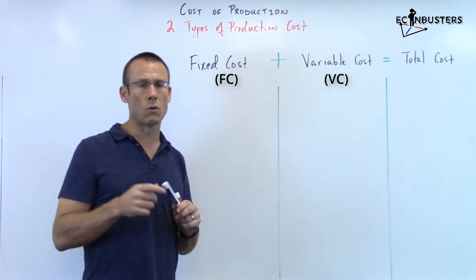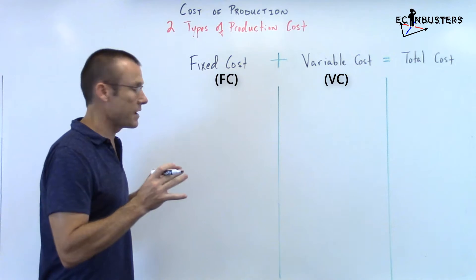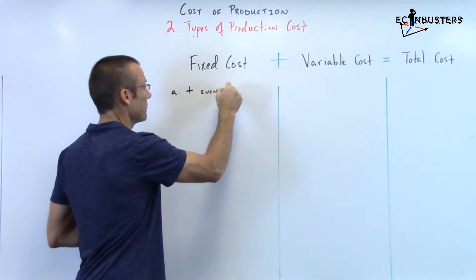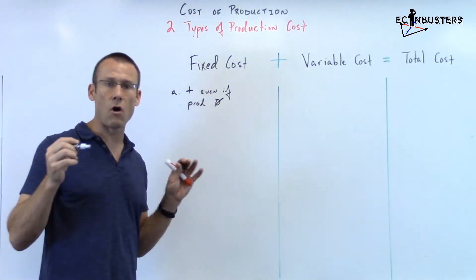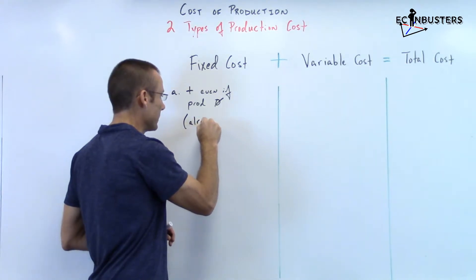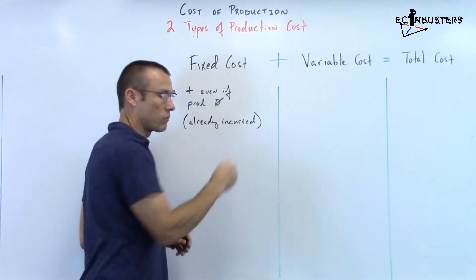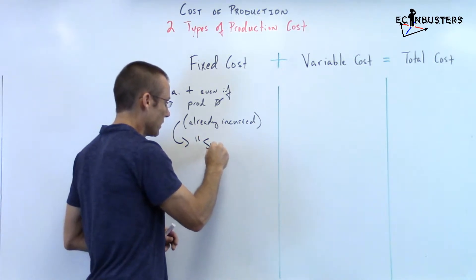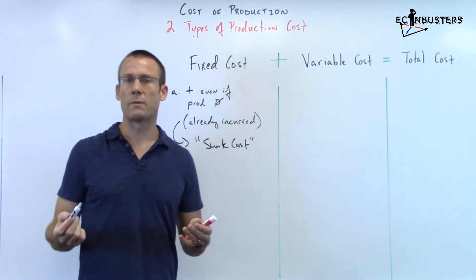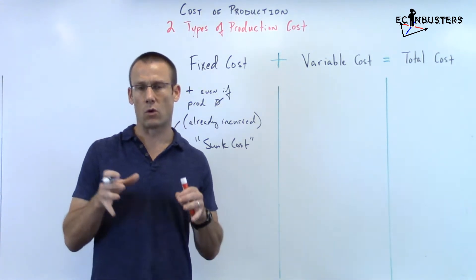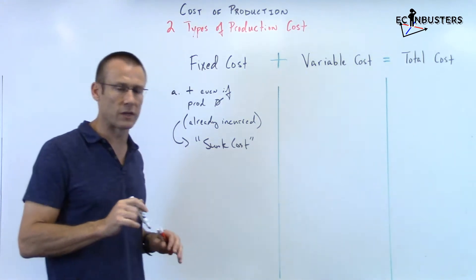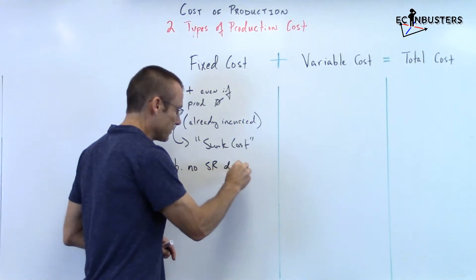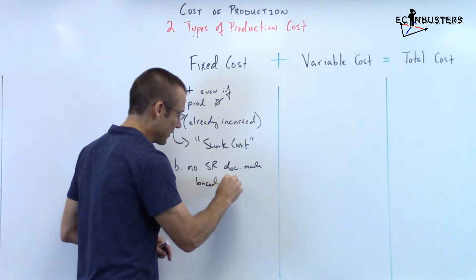Fixed cost: number one, they've already been incurred. They are a positive amount even if production is zero. So first: positive even if our production level is zero. That means they've already been incurred — these costs have already happened. Another name for fixed cost is sunk cost. And that gets us to the next point: do not make present or short-run production decisions based on fixed cost.